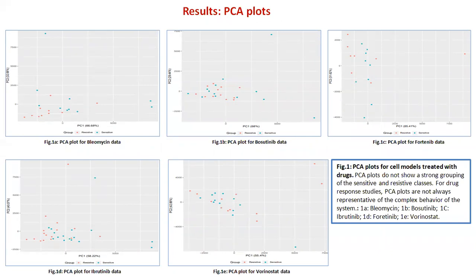PCA uses an orthogonal transformation to convert a set of observations of possibly correlated variables into a set of linearly uncorrelated variables called principal components. PCA analysis plots give gene profiles on a 2D plane, generating a visual graph where it is easy to see associated groups. In these plots, we can see the resistive groups and sensitive groups represented by red and blue dots respectively, but a strong separation between the two classes is not evident. For drug response studies, PCA plots are not always representative of the complex behavior of the system.